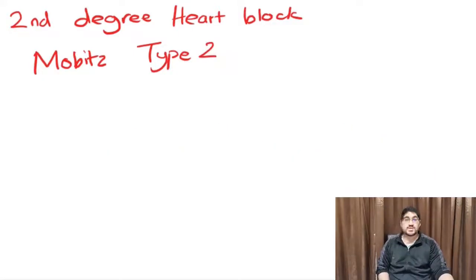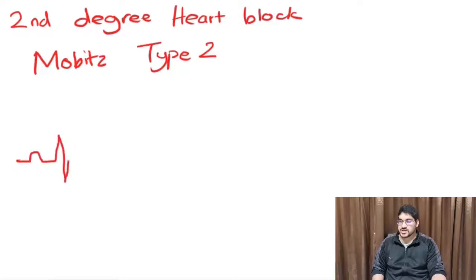Now Mobitz type 2 is slightly different. Mobitz type 2 is, again, you're at a roadblock and the cops are annoyed, but you don't actually know if they're going to be annoyed at you or not. There's no pattern to it. So every now and then they just pull off a car and no one can tell why. In Mobitz type 2, there's actually a uniform PR interval. It may be long, it may be normal. You actually don't know.